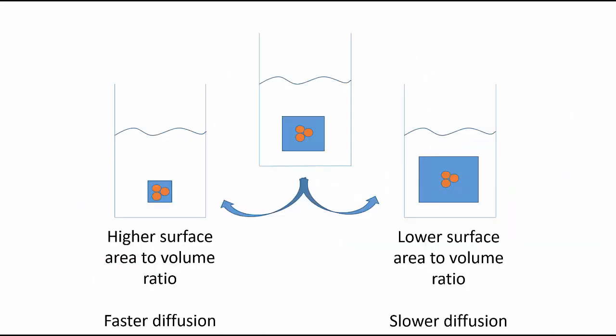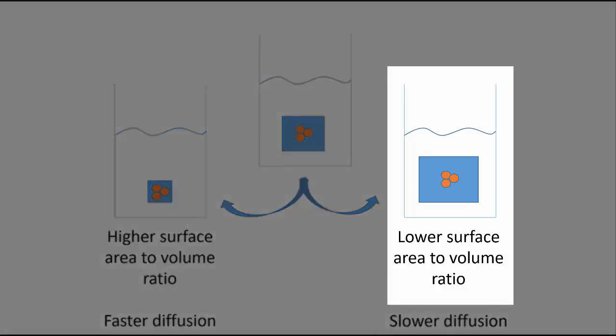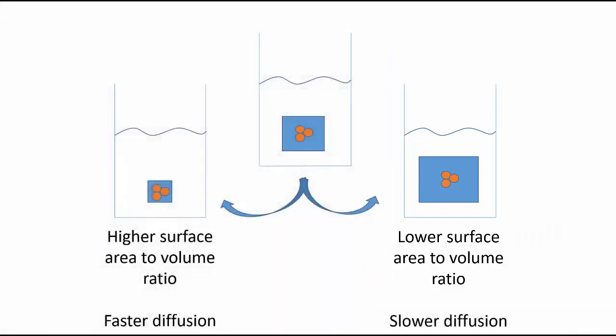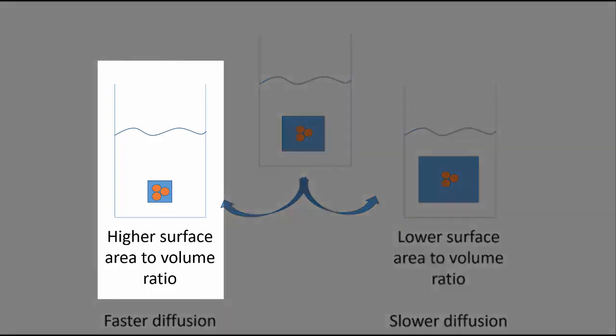The surface area to volume ratio of the cell influences the movement of molecules. For example when there is more cell volume and less surface area diffusion takes longer and diffusion happens faster when there is more surface area relative to volume.